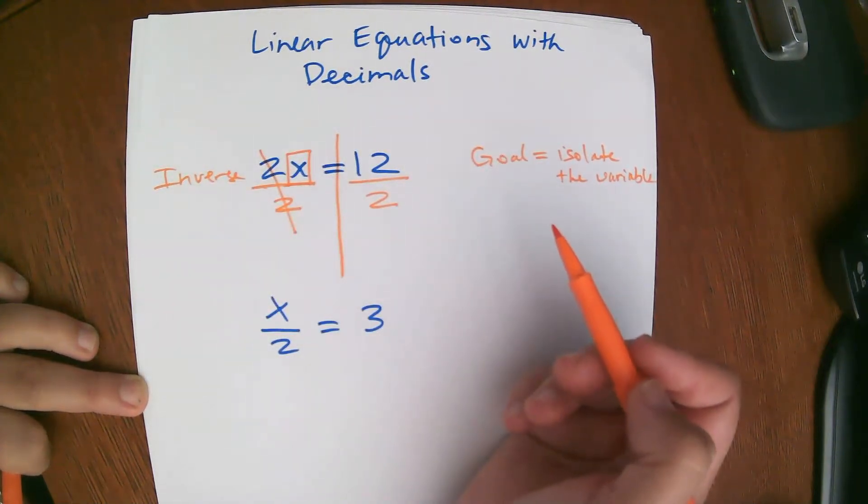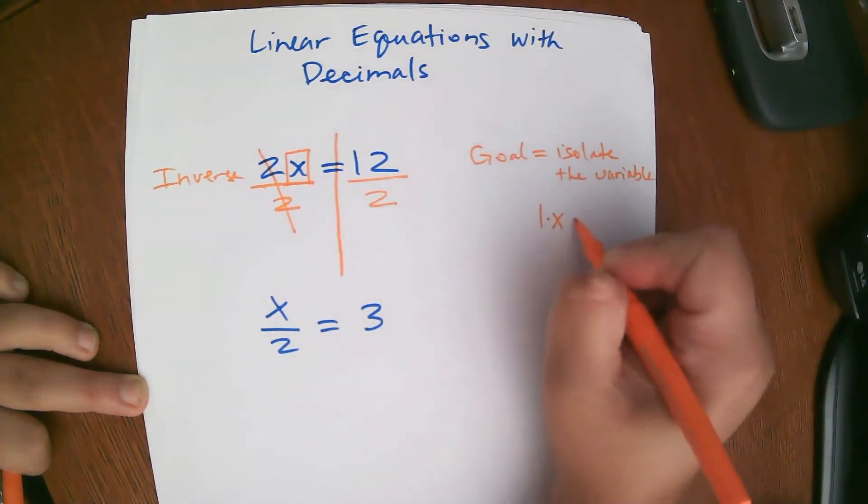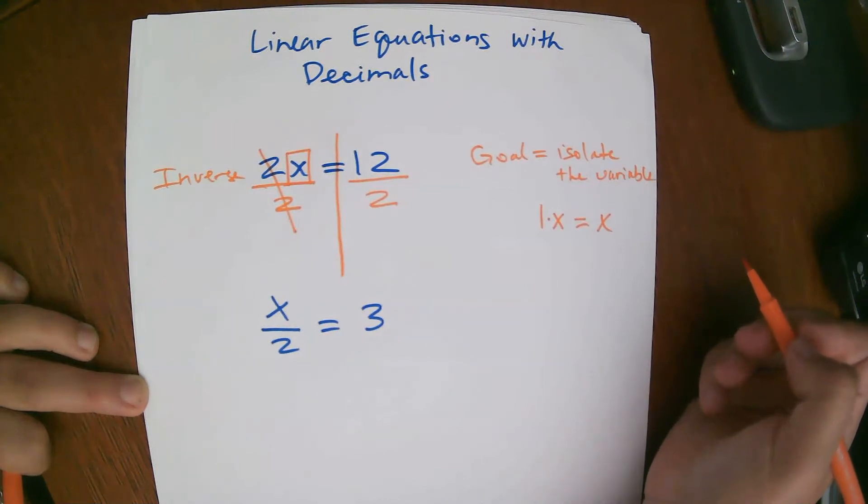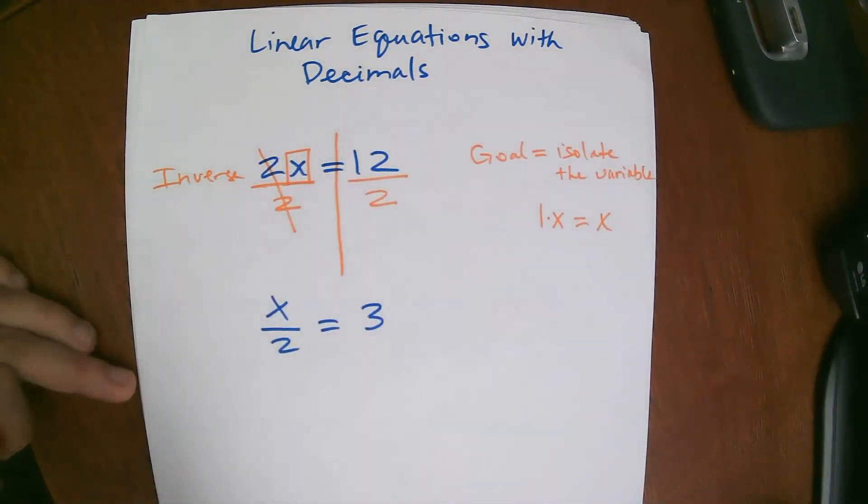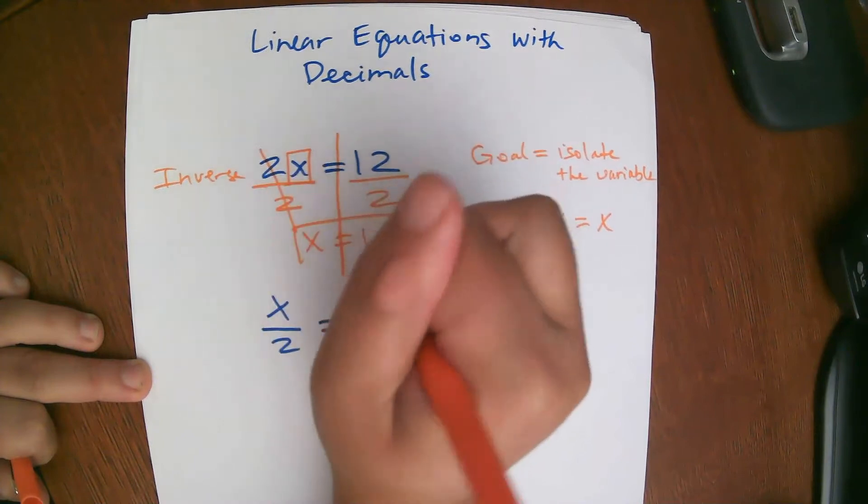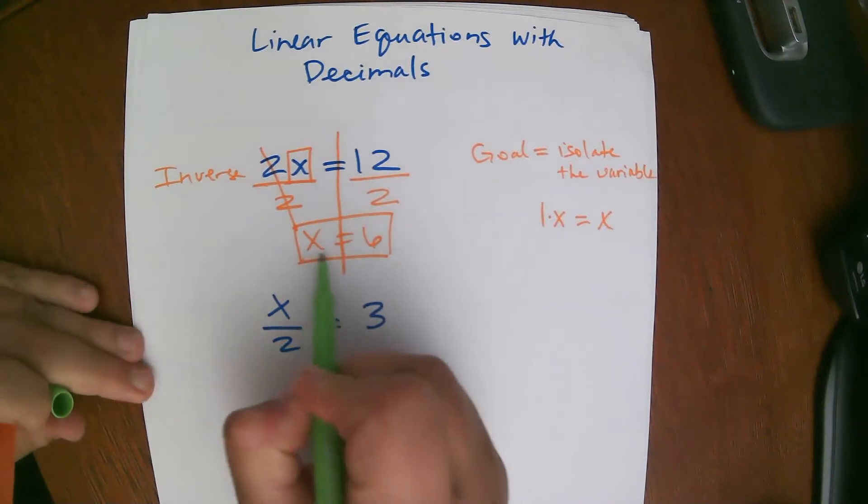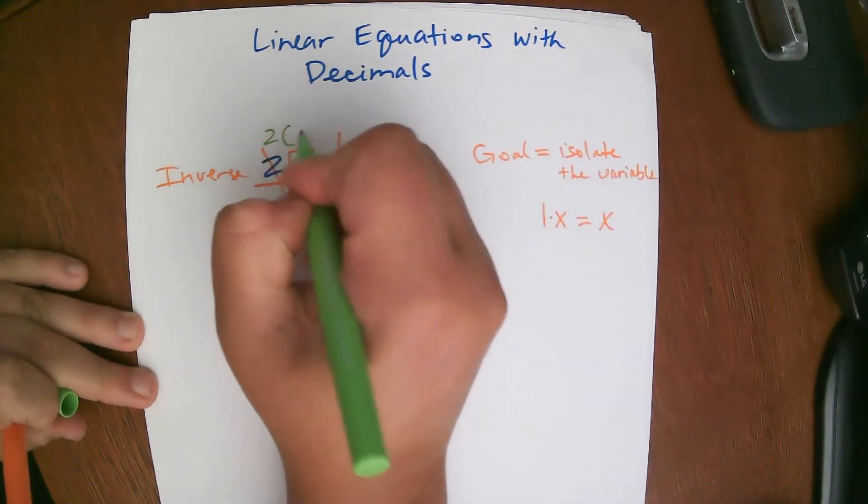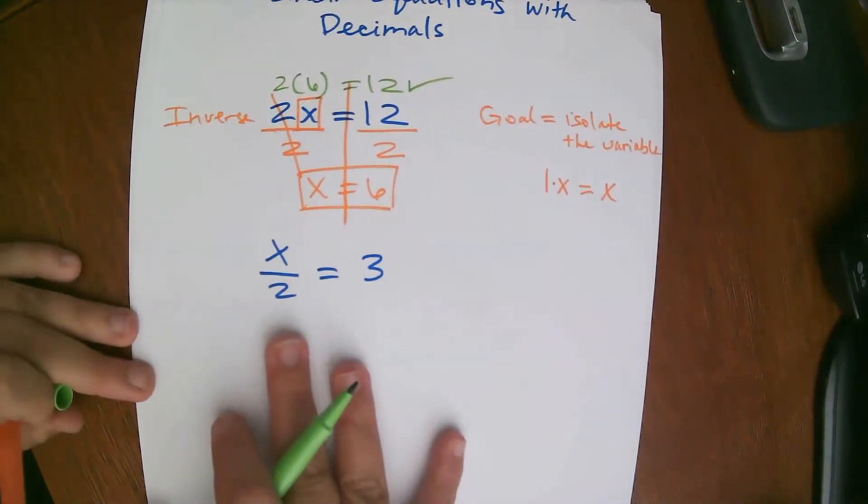This actually becomes 1. 2 divided by 2 is 1. And x is okay with 1 in front of it. Why do you think x is okay with 1 in front of it? Well, 1 times x is just x. So 1 does not alter x at all. So it's okay to have a 1 in front of it. In fact, all variables have a 1 in front of it, multiply. So we're just left with x on this side, which is exactly what x wants. And then 12 divided by 2 is 6. Of course we can check these, just like we checked our other variable equations. So we plug in our 6 for x. So 2 times 6 has to equal 12, which it does. We got it right.